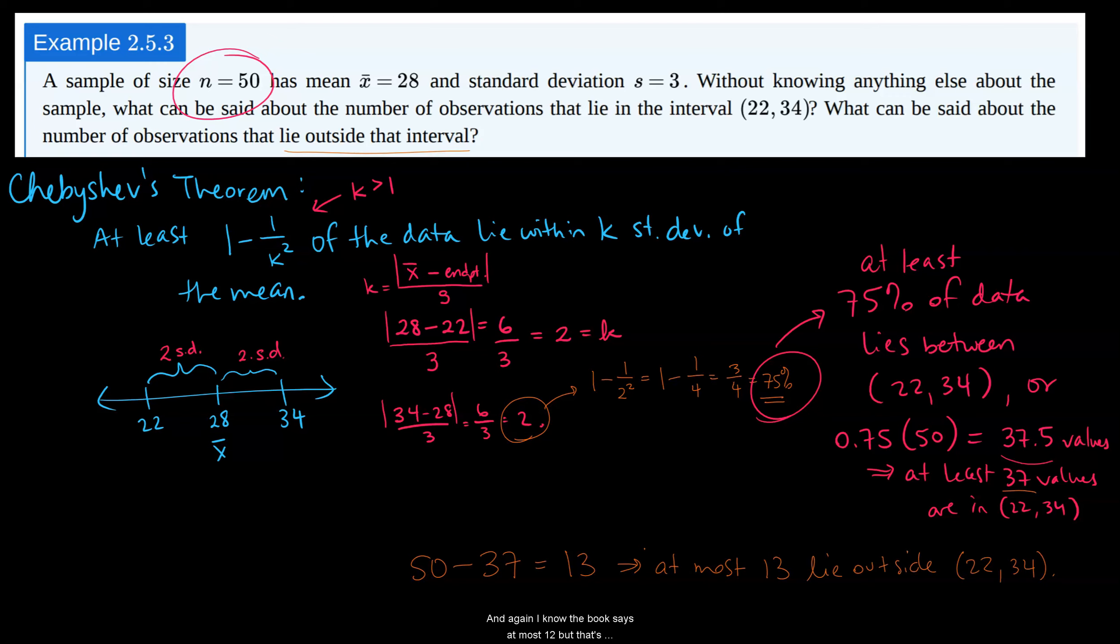And again, I know the book says at most 12. But that's, again, coming from the rounding of the 37.5, which way do you round it kind of thing. I like to err on the side of caution, which is why I erred down to 37 instead of up to 38. Because I'm saying at least 37, so 38 is already included in that.